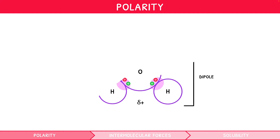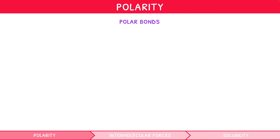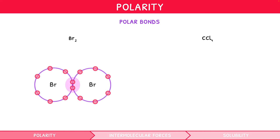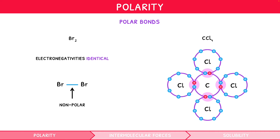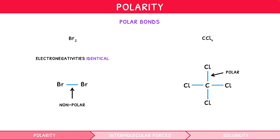For your IB Chemistry exam, you need to be comfortable labelling a polar bond. Let's look at examples using Br2 and CCl4. Br2 joins two identical atoms, so their electronegativities are identical and the electrons lie perfectly between the two atoms — therefore the bond is nonpolar. CCl4 joins carbon to chlorine; using the data booklet, carbon has an electronegativity of 2.6 and chlorine 3.2. Therefore the electrons lie slightly closer to chlorine, each bond is polar, and chlorine is slightly negative. The negative poles on the chlorines are shown with a delta-negative symbol, and the positive pole on the carbon with a delta-positive symbol.